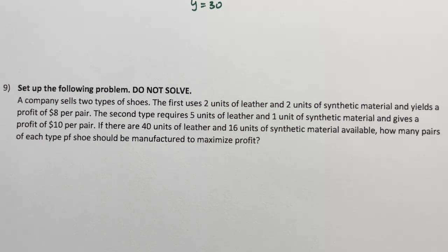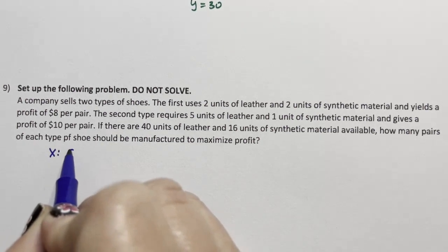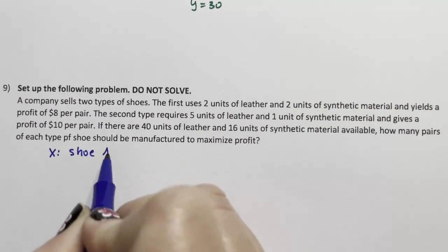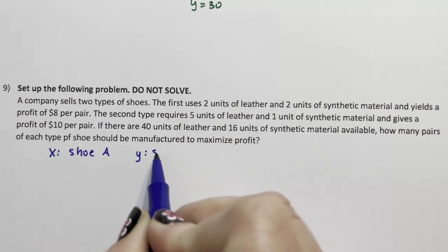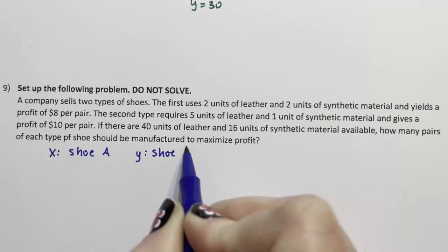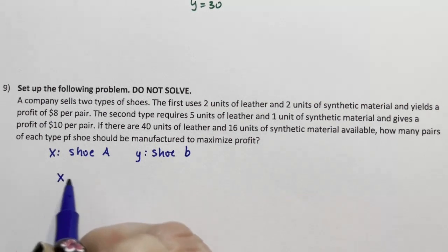If there are 40 units of leather and 16 units of synthetic material, how many pairs of each type of shoe should be manufactured to maximize profit? Okay. I'm going to say X is shoe A and Y is shoe B.